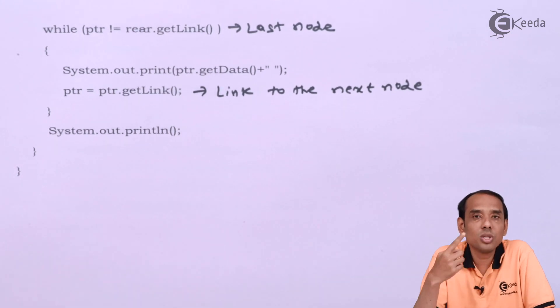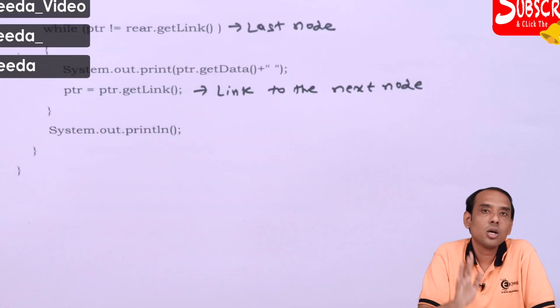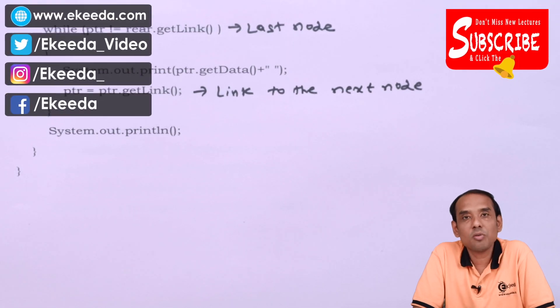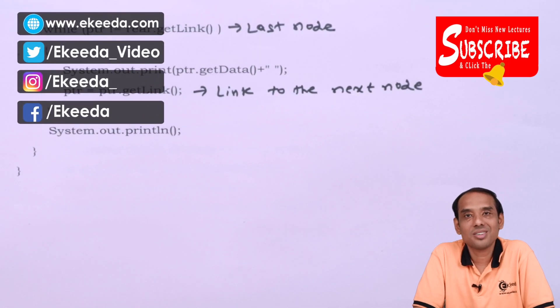And then I will iterate through the entire loop until rear.getLink is there. When this is done, ptr.getLink will transfer to the ptr. Like this, I will iterate through the entire queue. Thank you. Thank you for watching this video. Please subscribe to Ekeeda channel.